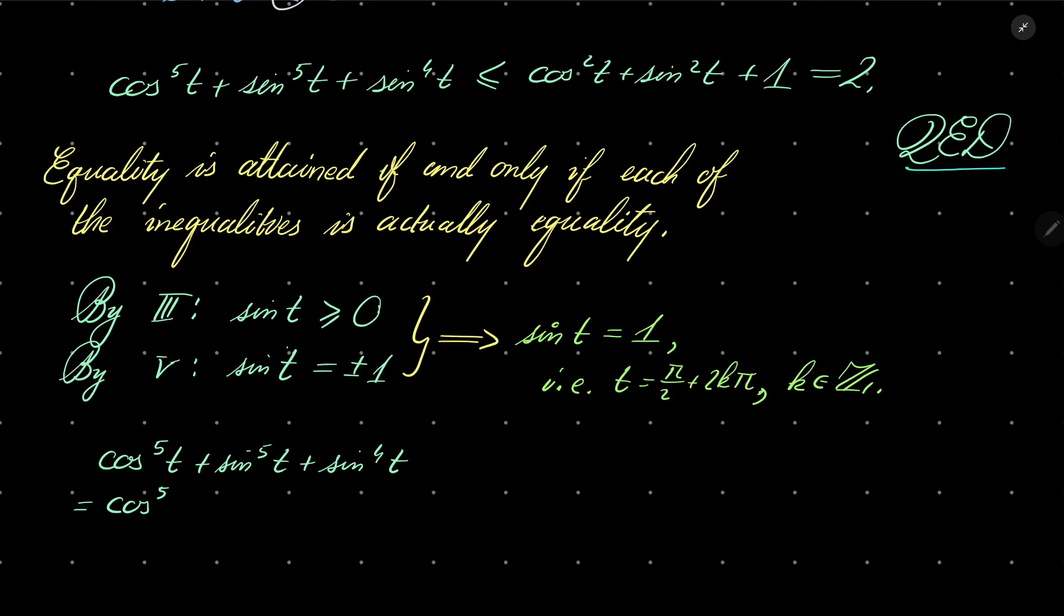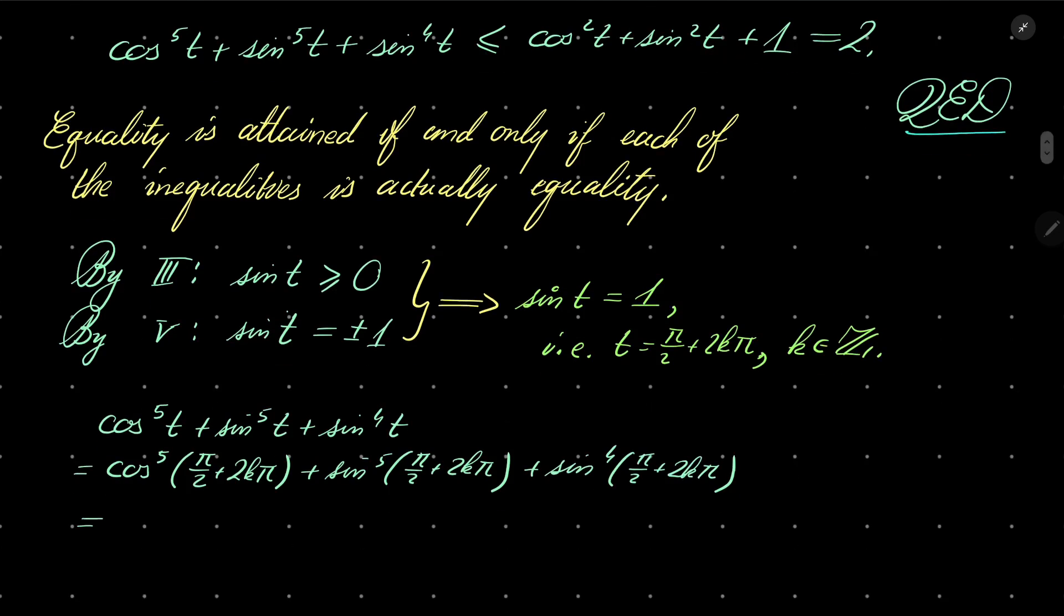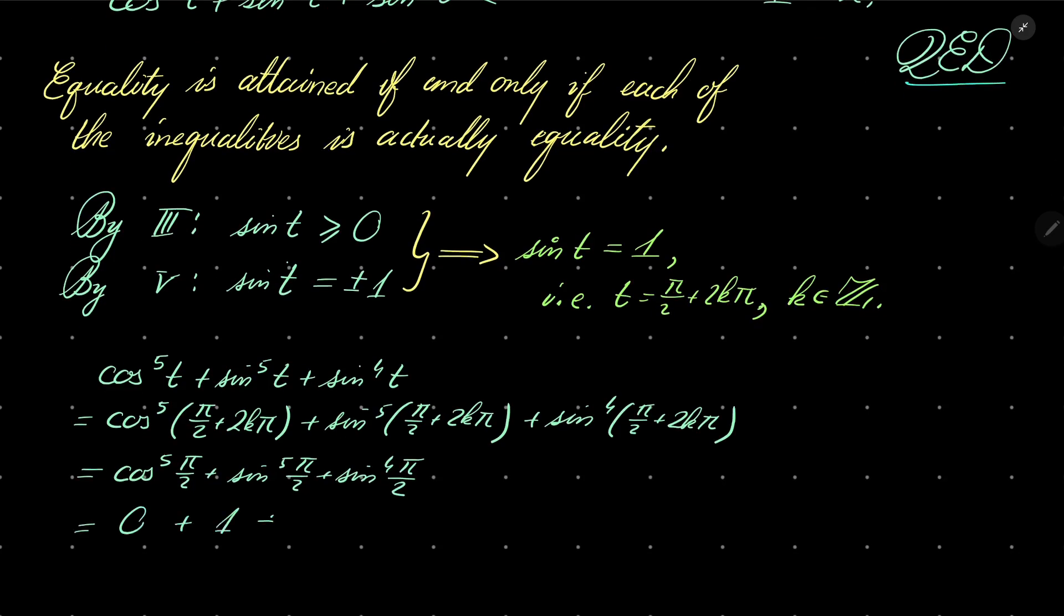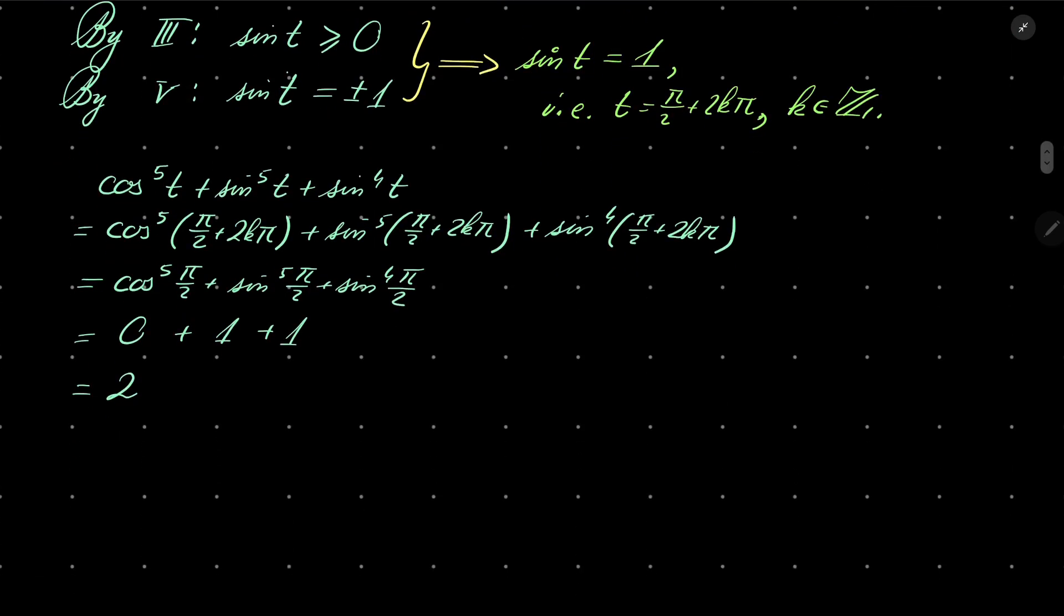So, we have pi over 2 plus 2k pi, plus sine to the 5th power of pi over 2 plus 2k pi, plus sine to the 4th power of pi over 2 plus 2k pi. Well, the first number is cosine of pi over 2, then we have sine of pi over 2, and once again, sine of pi over 2. So, we have 0 plus 1 plus 1, which is 2. So, in other words, cosine to the 5th power plus sine to the 5th power plus sine to the 4th power of t equals 2, if and only if t equals pi over 2 plus 2k pi for some integer k.